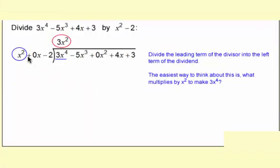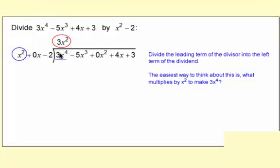Now the first thing you do is divide the leading term of the divisor into the leading term of the dividend. In other words, x² divided into 3x⁴. If you have a hard time with that, you can just say, if I have x², what do I multiply by to make 3x⁴? Well, it's 3x². So that's what you put up top.